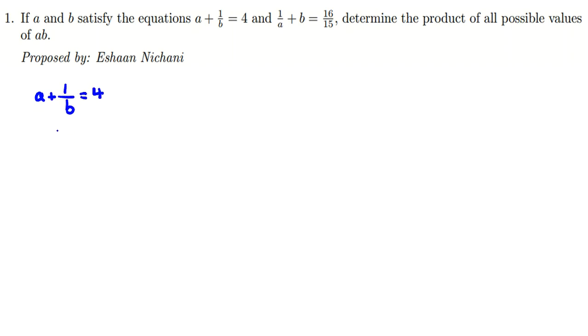The next equation is 1 over a plus b equals 16 over 15. Now we multiply both sides by b to get rid of this denominator. It will be ab plus 1 equals 4b.